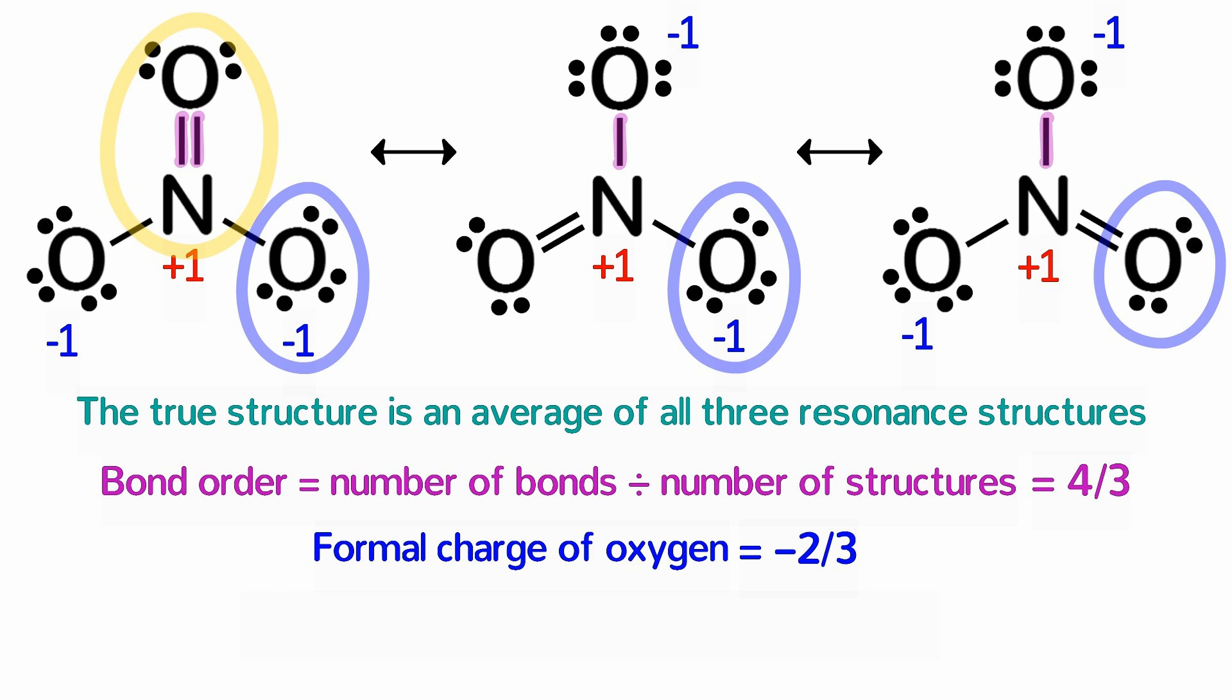Okay, so far, both examples that we have looked at have equivalent resonance structures. That is, because of their symmetry, all of the resonance structures contribute equally to the true structure. But that is not always the case. Oftentimes, one or more resonance structure is better than the others.